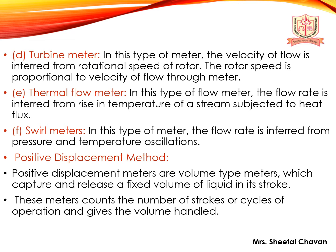The thermal flow meter infers the flow rate from the rise in temperature of a stream subjected to heat flux. The spiral meter infers the flow rate from pressure and temperature oscillations. The positive displacement method uses volume-type meters which capture and release a fixed volume of liquid per stroke, counting the number of strokes or cycles to give the volume handled.